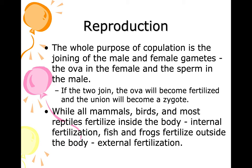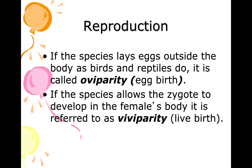The whole purpose of copulation is the joining of the male and female gametes — the ova in the female and the sperm in the male. If they join, the ova becomes fertilized and the union becomes a zygote. Mammals, birds, and most reptiles fertilize inside the body — internal fertilization. Fish and frogs fertilize outside the body — external fertilization. If a species lays eggs outside the body, as birds and reptiles do, it is called oviparity, or egg birth. If the zygote develops in the female's body, it is viviparity, or live birth.